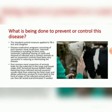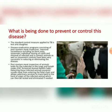The standard control measure applied to TB is test and slaughter. Disease eradication programs consisting of post-mortem meat inspection, intensive surveillance including on-farm visits, systematic individual testing of cattle, and removal of infected and in-contact animals as well as movement controls have been very successful in reducing or eliminating the disease.